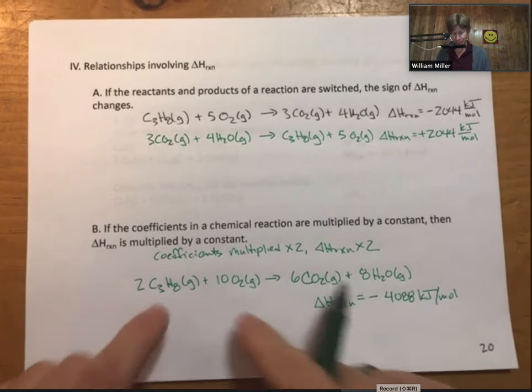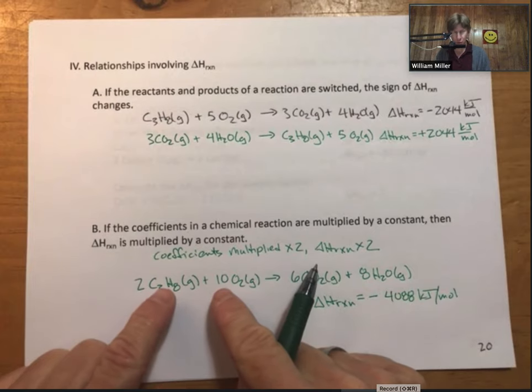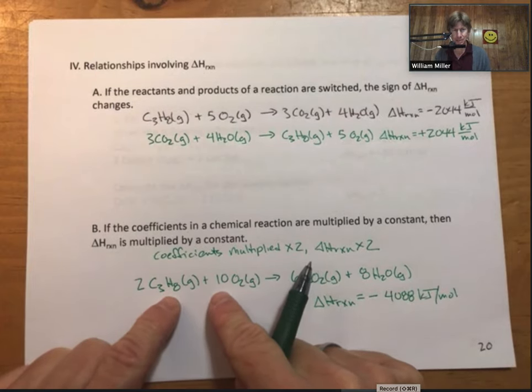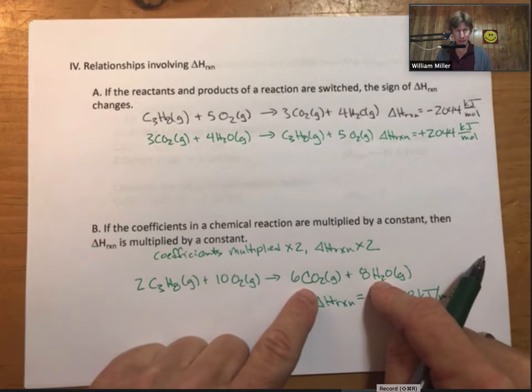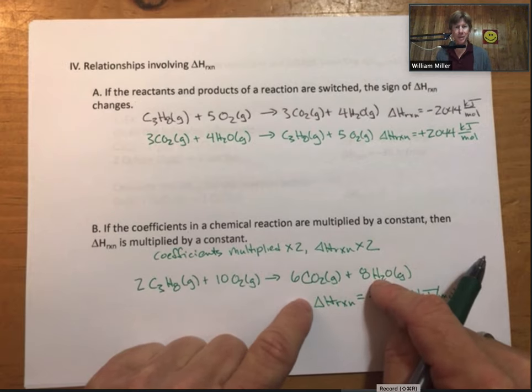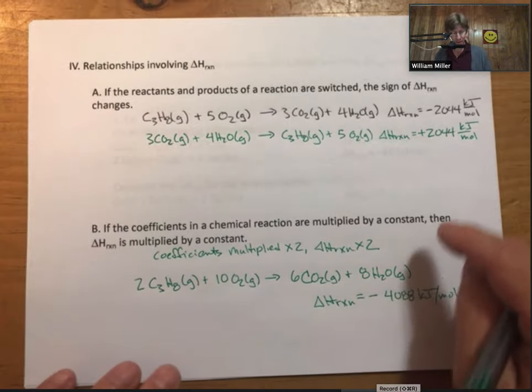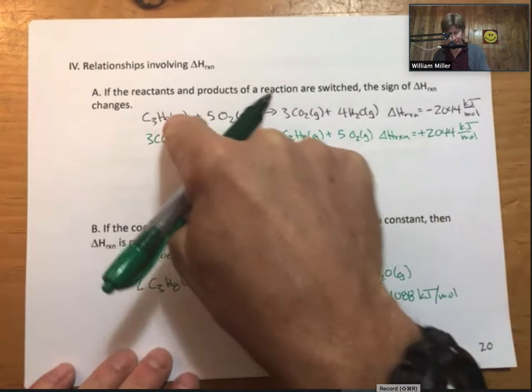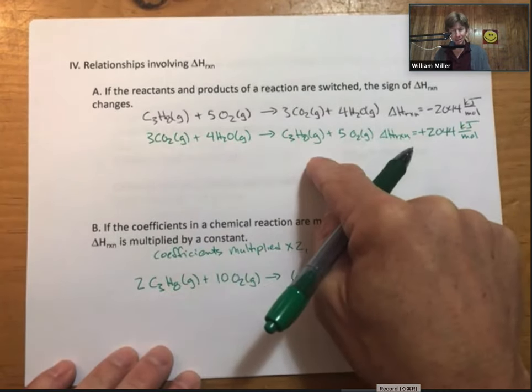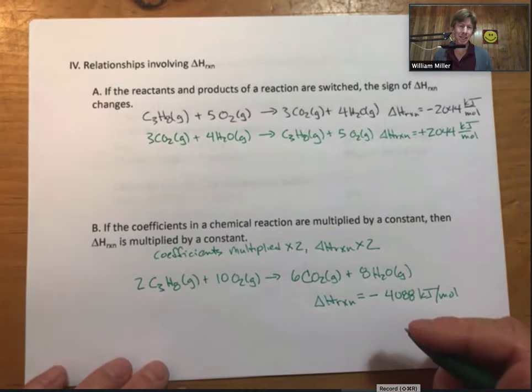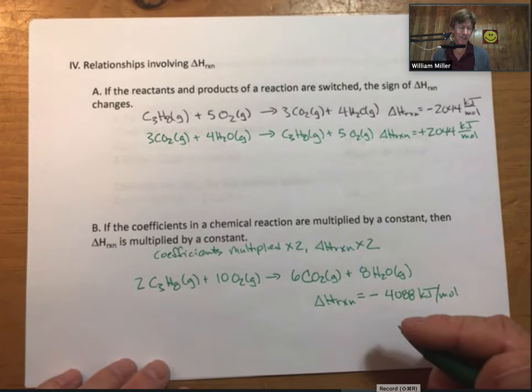And in the same way, if we have twice as much reactants, twice as large of an amount going to twice as large an amount of products, then we should expect to get twice as much energy released. In addition, each reaction with its own set of coefficients, its own reactants and products, has its own delta H value. So please be aware of that as well.